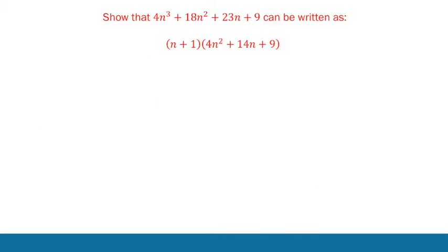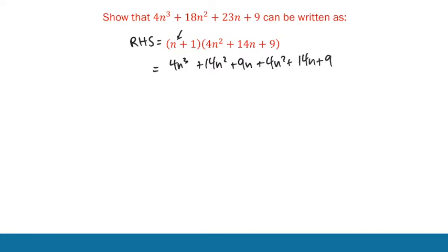Let's start with part A and prove that result. There are a few ways to do this proof. The easiest is probably to expand the right-hand side. Doing a quick expansion gives us 4n³ + 14n² + 9n from the n, and then the 1 gives us 4n² + 14n + 9. Grouping those terms, we do indeed get what we have in the problem — equal to the left-hand side. This is only worth a mark, so you don't want to spend too much time on it.